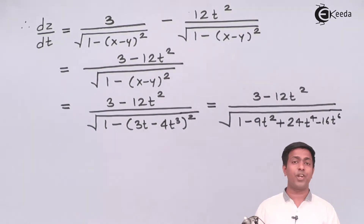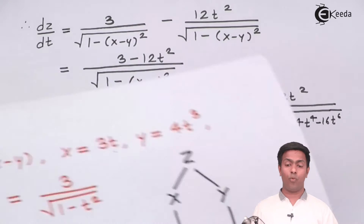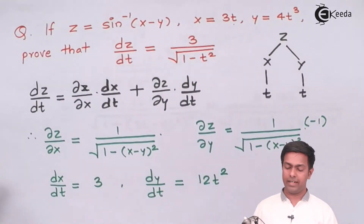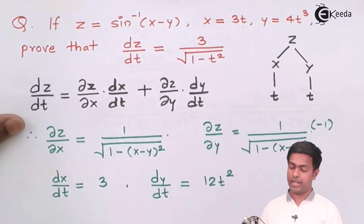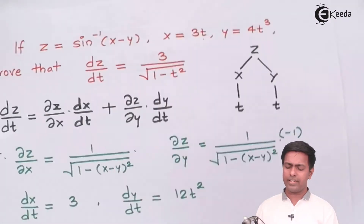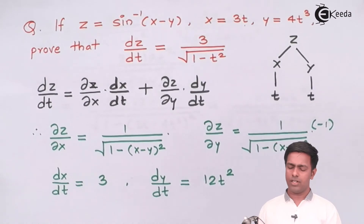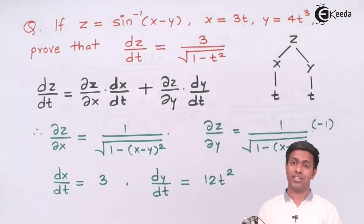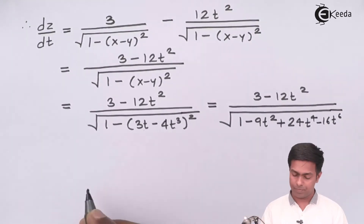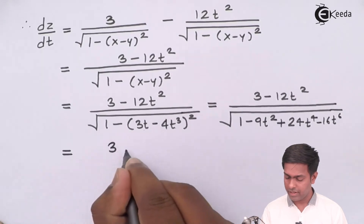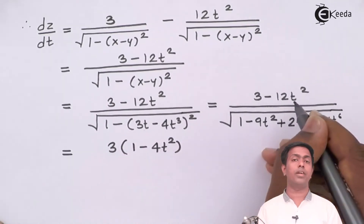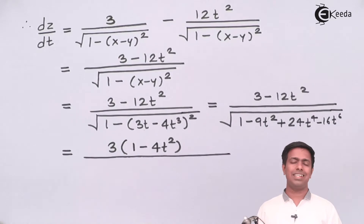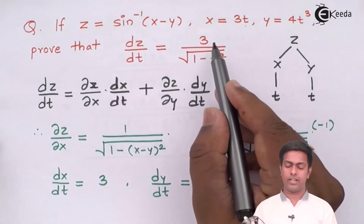Now we have the full expansion of the denominator. Looking at what we want — the numerator should be just 3 and the denominator should be √(1 minus t²). Since I want only 3 in the numerator, I'll take 3 common from the numerator, giving 3 times (1 minus 4t²). The key is to eliminate (1 minus 4t²) from the numerator by bringing it into the denominator.